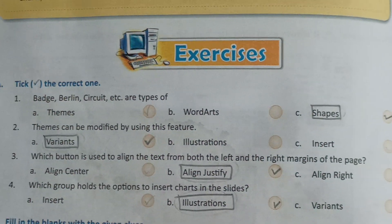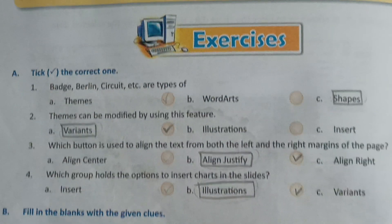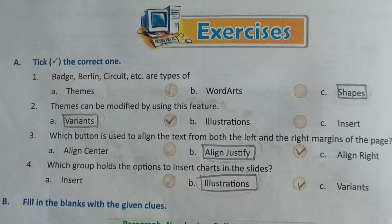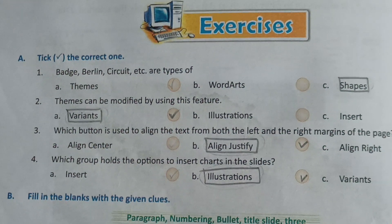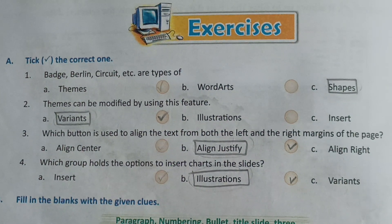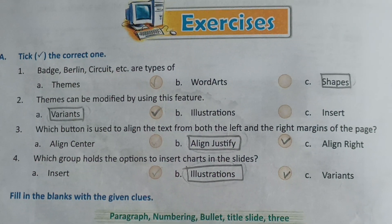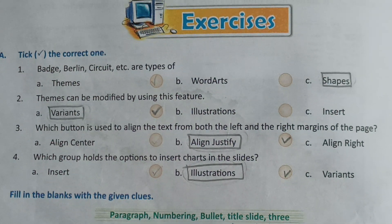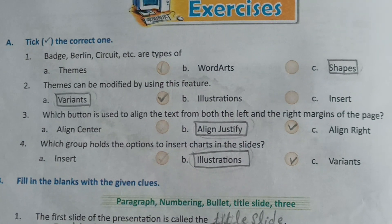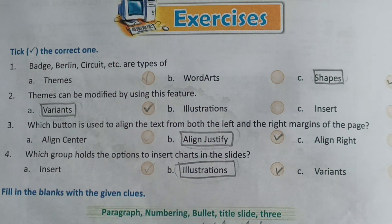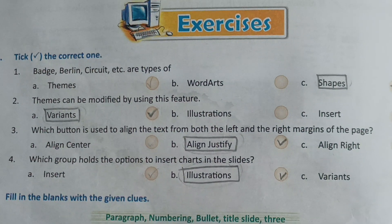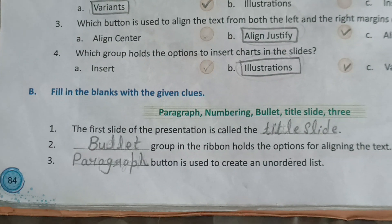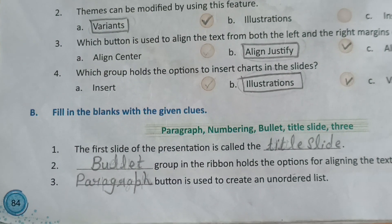Number two: Themes can be modified by using this feature — the correct answer is Variants. Number three: Which button is used to align the text from both the left and the right margins of the page? The answer is Align Justify. Number four: Which group holds the options to insert charts in the slides? The correct one is Illustrations.